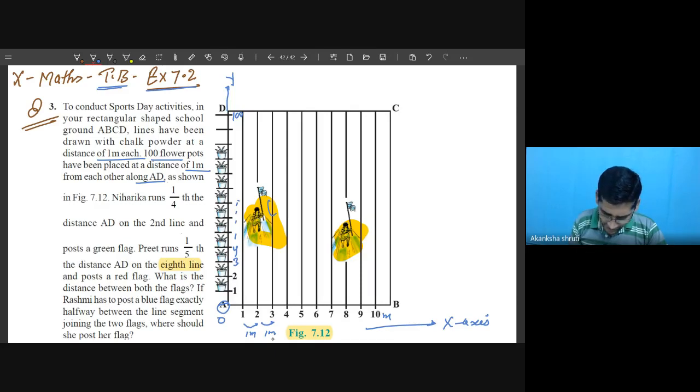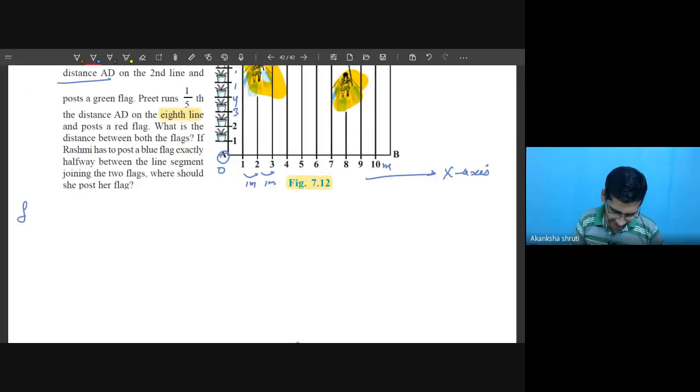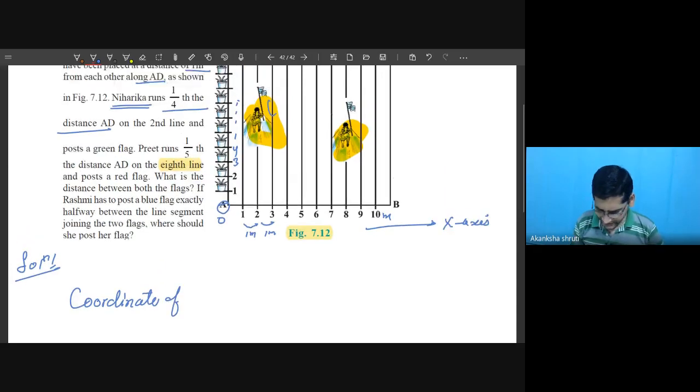Now one student Niharika runs one-fourth the distance AD. So what is the position of Niharika? So Niharika is one-fourth of AD. Write coordinate of Niharika.